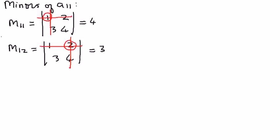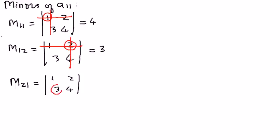Let us find minor M21. To find M21, we write the elements down: 1, 2, 3, and 4. Since we want to find the minor of element A21, we circle the second row, first column element. We delete the second row and delete the first column, and whatever is left is going to be the minor of that particular element. M21 is equal to 2.